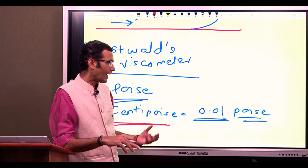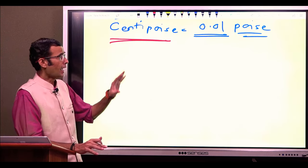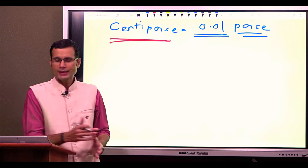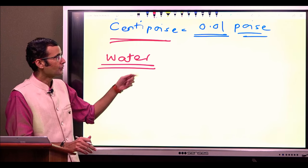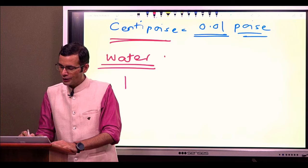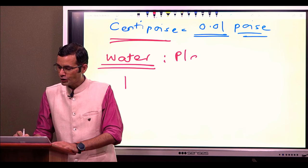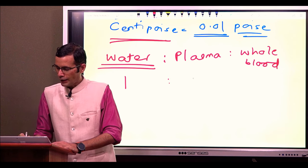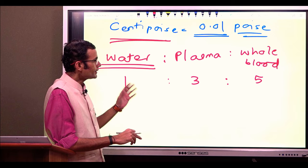For instance, water has a viscosity of 0.01 poise or 1 centipoise. These are absolute terms, but we can also measure viscosities in relative terms. If we consider the viscosity of water as 1, then the relative viscosities of water to plasma to whole blood are 1 to 3 to 5.